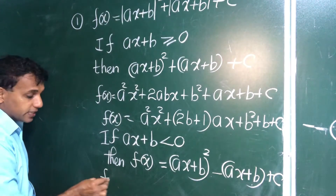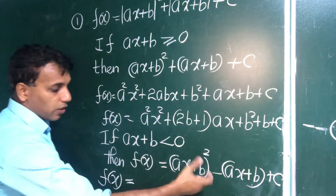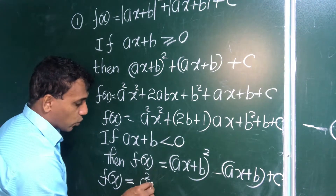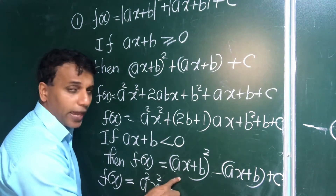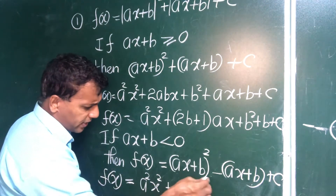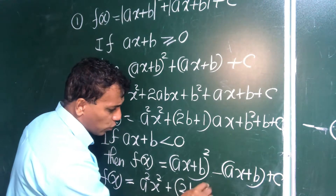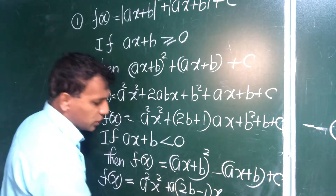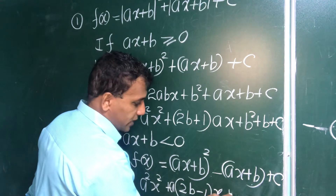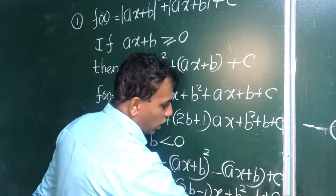Expanding for case two gives: a squared x squared plus 2ab·x minus a·x, so factoring out a we get (2b − 1)·a·x, plus b squared minus b plus c equals zero. This is the second quadratic equation.